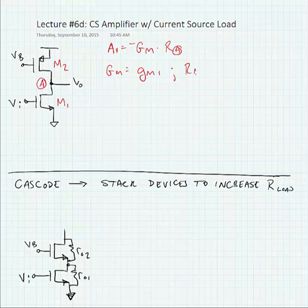RA is equal to RO1 in parallel with RO2, the output resistances of both transistors. So we're really just finding the output resistance looking up into one transistor and down into the other transistor and putting them in parallel.